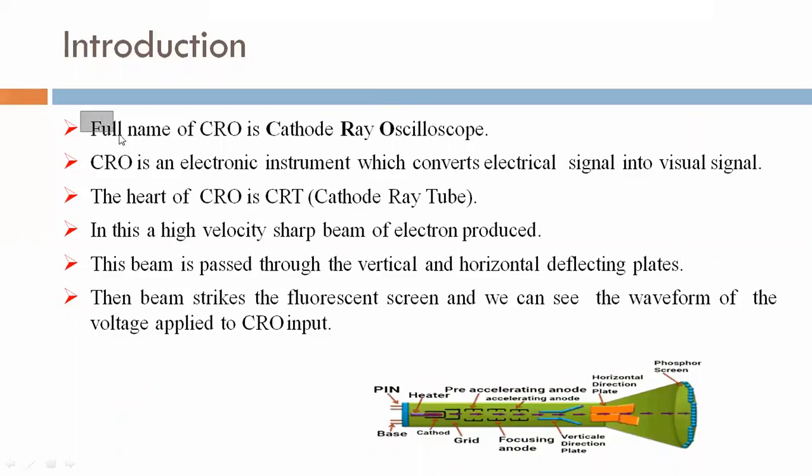Full name of CRO is cathode ray oscilloscope. CRO is an electronics instrument which converts electrical signal into visual signal. The heart of CRO is CRT cathode ray tube, here we are seeing in this figure.